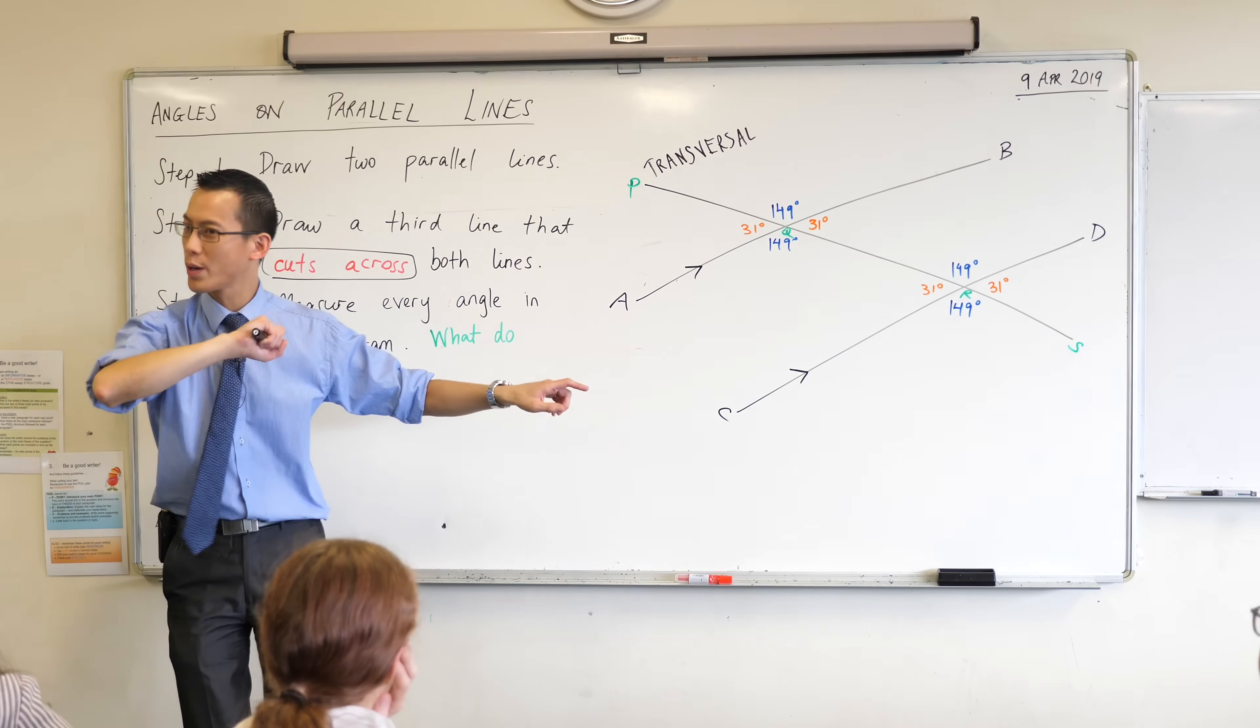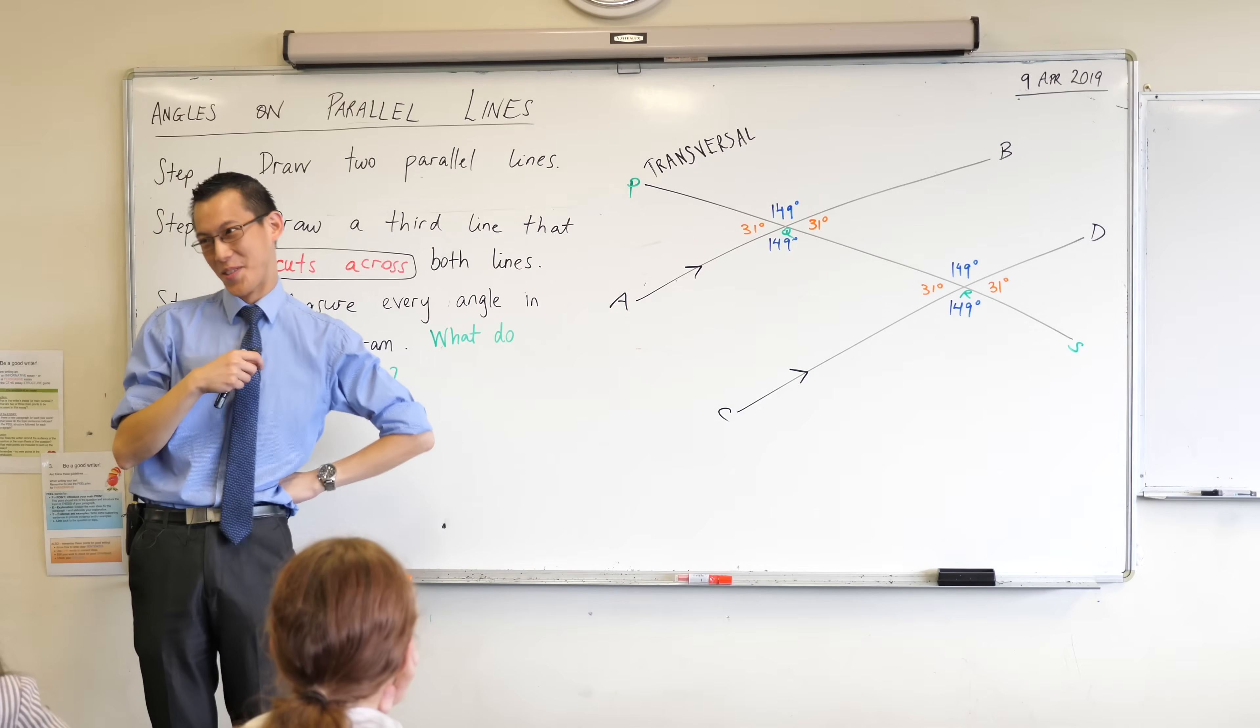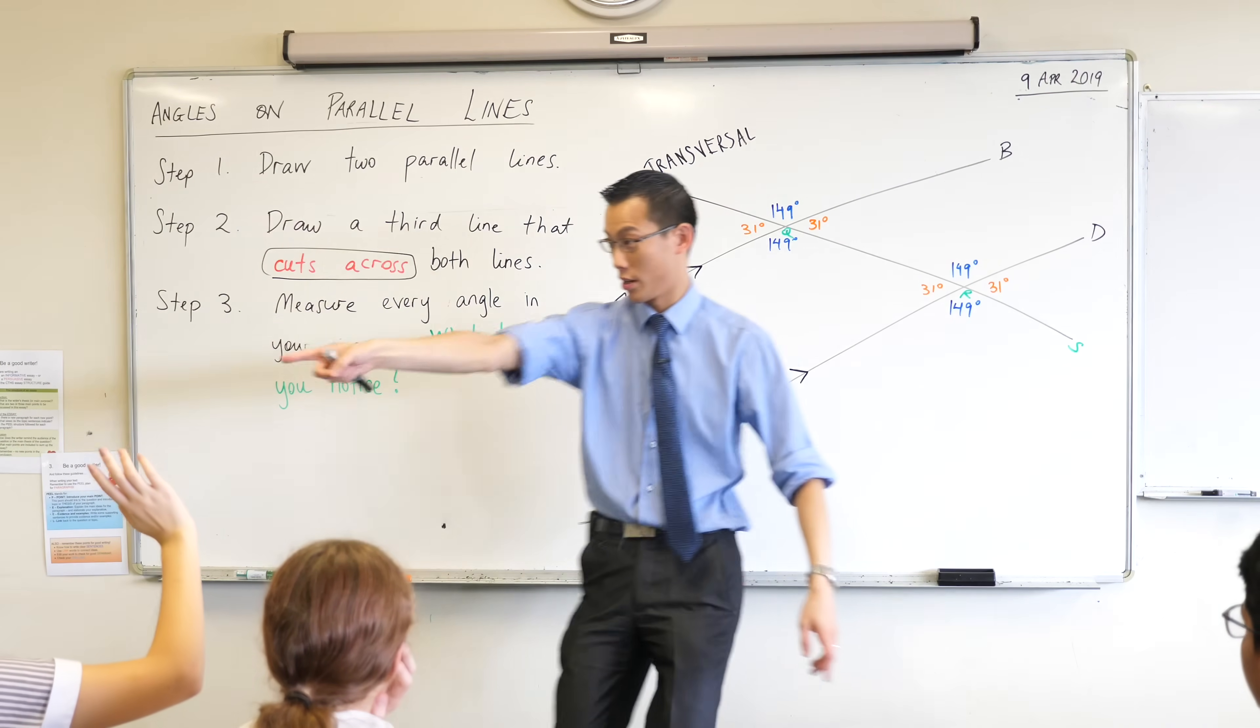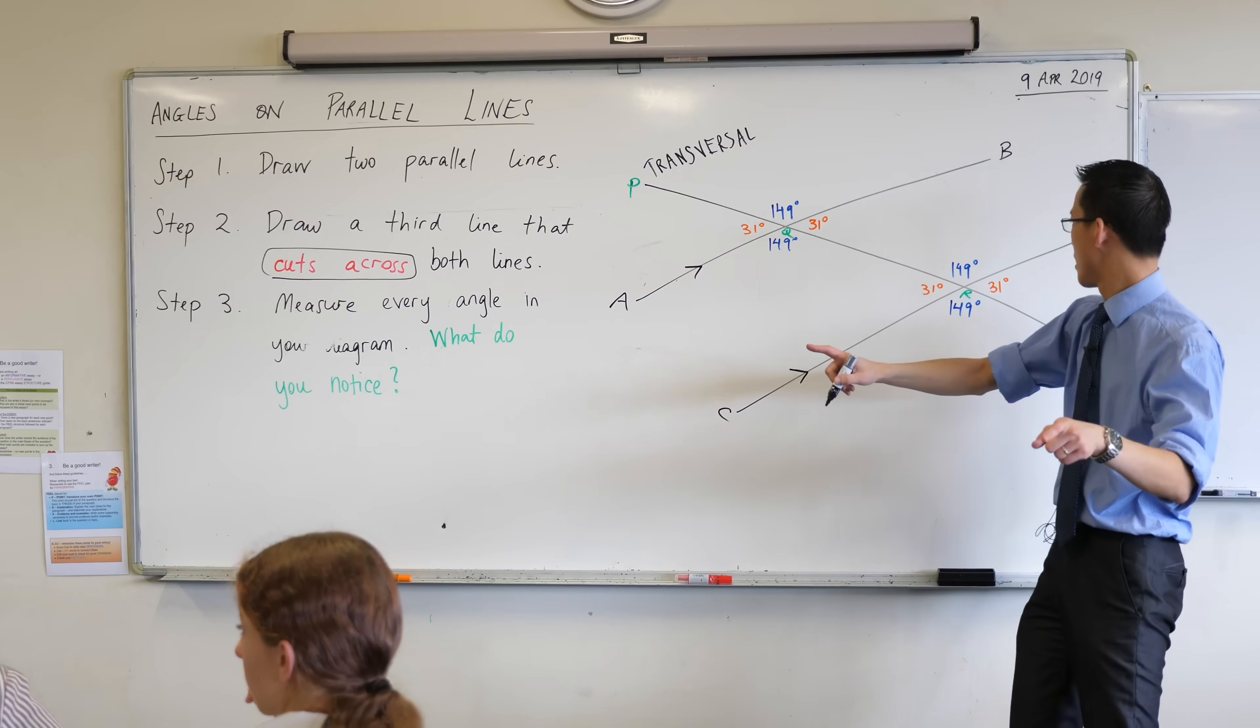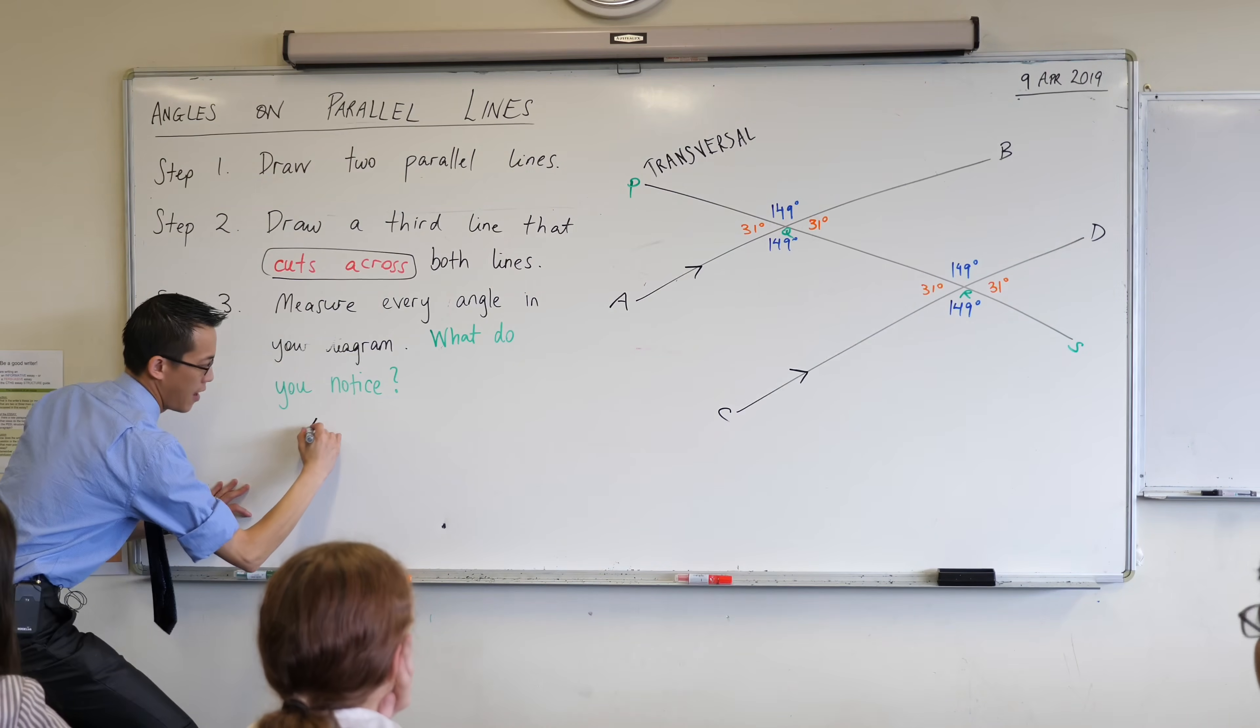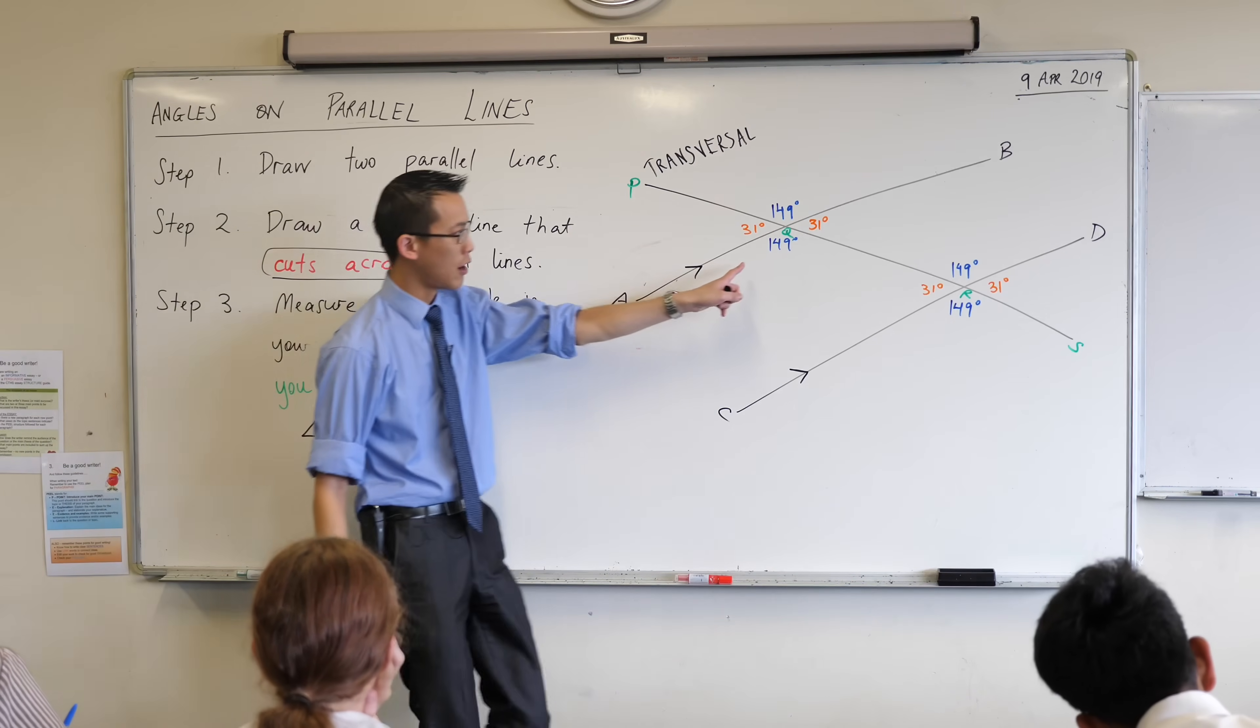Okay so you said 149 and 31 which are the sizes of those angles, right? However, on my diagram I have a whole lot of 149s and a whole lot of 31s. Can someone name a specific 149 for me and a specific 31? Hiang. Angle AQR. Okay pause right there. AQR. So you can see the way that Hiang named this. In fact I'd love you all to follow along with me. Angle AQR. So that one is this blue 149 degrees.